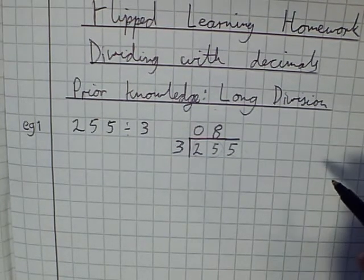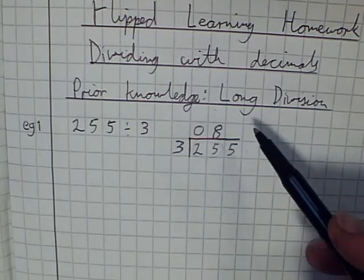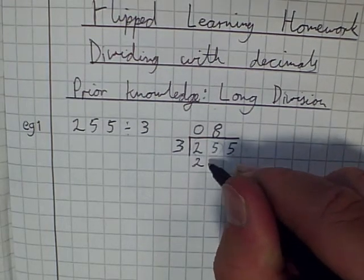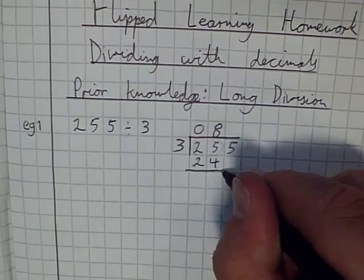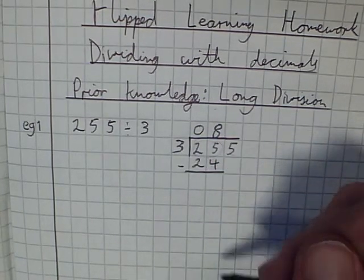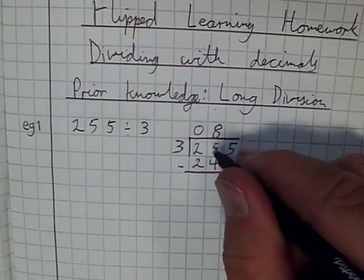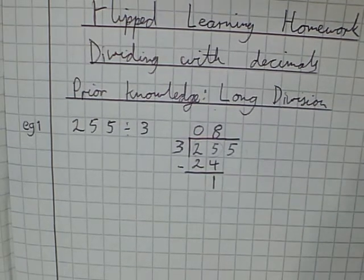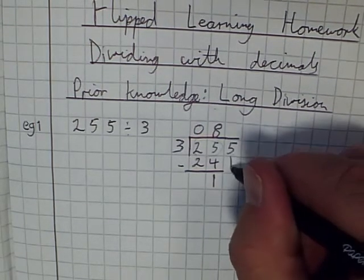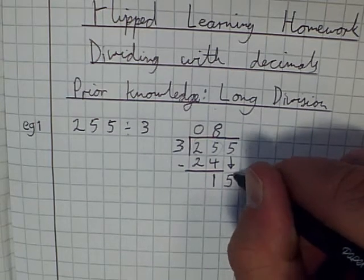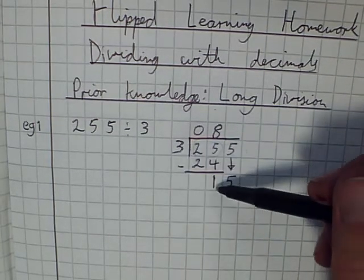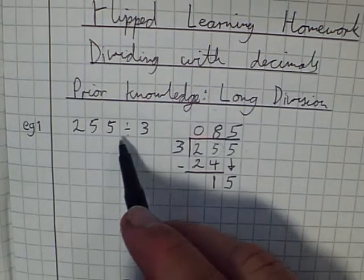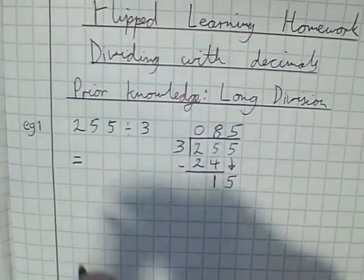Now there's a short method, but I'm going to show you the long method because I think it's more useful when it comes to actually dividing by decimals. So 8 times 3 gives me 24. Again, I'm sticking to one number per square in order to make my work nice and neat. So if I take 24 away from 25, I have what's left over, and there's just one left over. Now I'm going to bring down this 5, so this becomes 15. So how many times does 3 go into 15? It goes in 5 times. So my answer to 255 divided by 3 is 85.